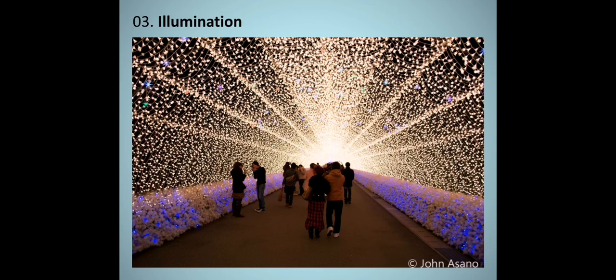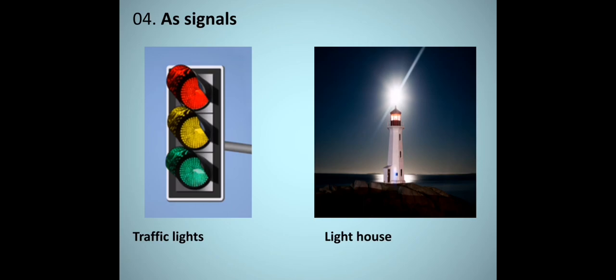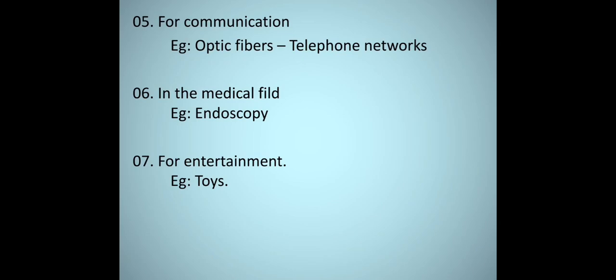Light is also used for illumination and decoration — in lanterns, pandas, and many other decorations we use light. Light is used as signals — traffic lights use light to give signals, and lighthouses emit light to give signals. For communication, telephone networks operate using the technology of optic fibers.